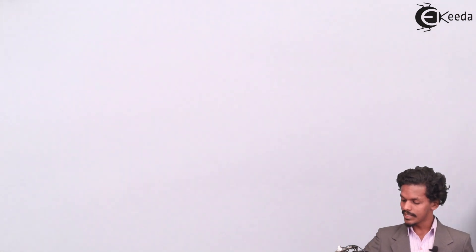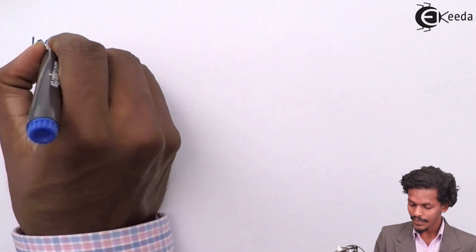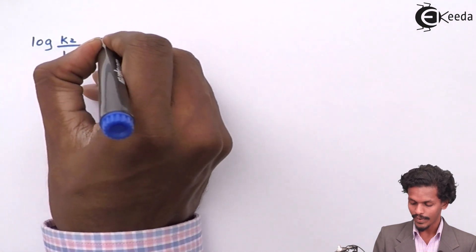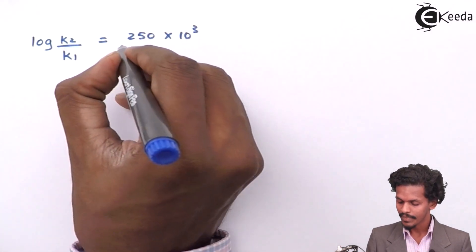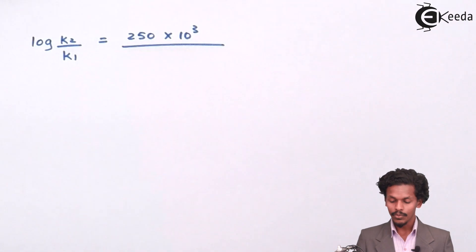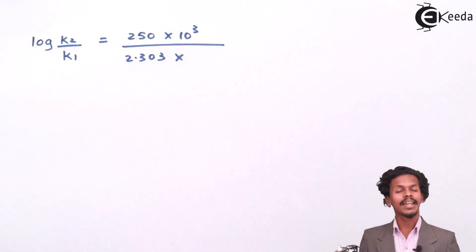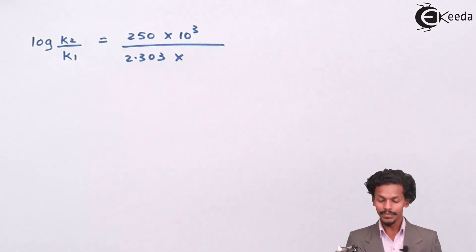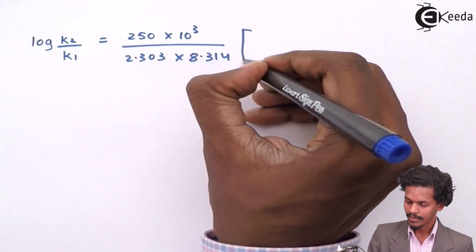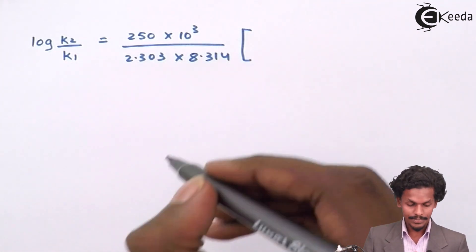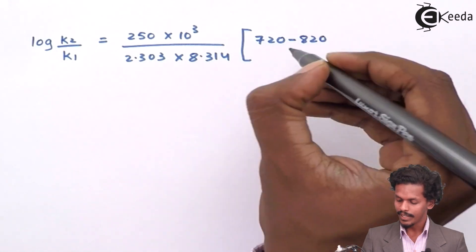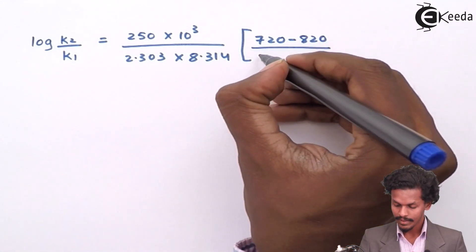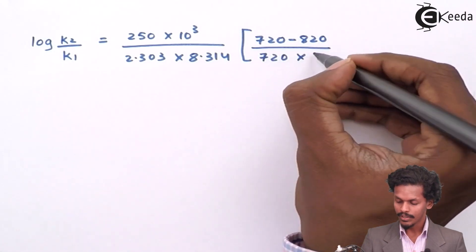Substituting into the equation, log of K2 divided by K1 equals EA which is 250 into 10 raised to 3, divided by 2.303 into R. R is the gas constant with a value of 8.314. The value of T2 is 720 and T1 is 820, with the whole product of T1 and T2 — that is 720 into 820 — in the denominator.